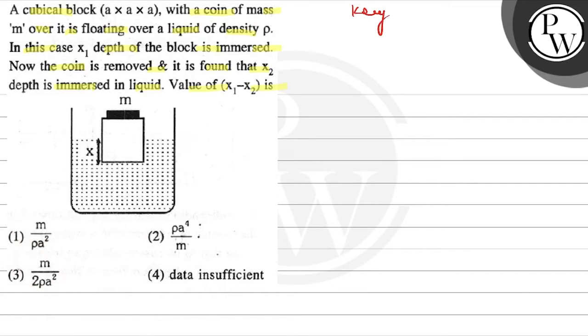Key concept: the variation in immersed volume is related to the variation in weight of the body.